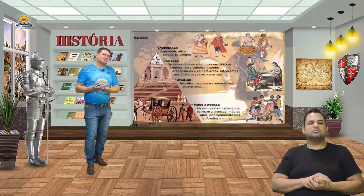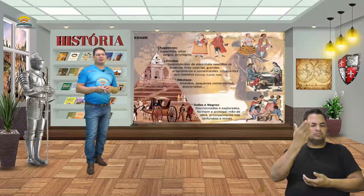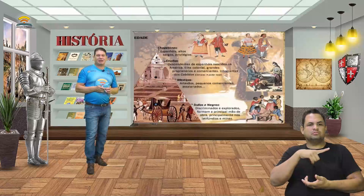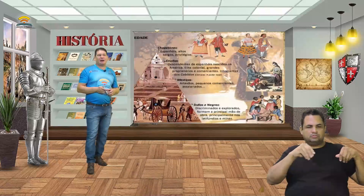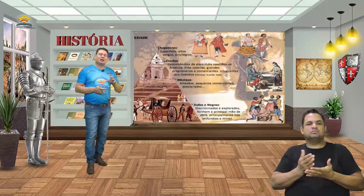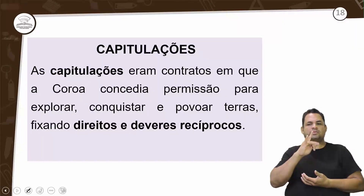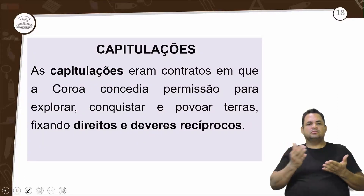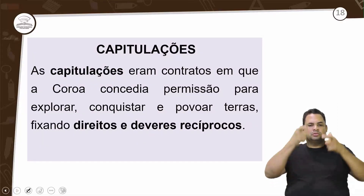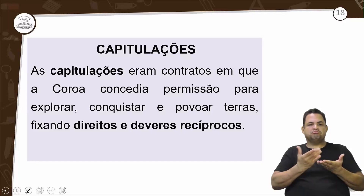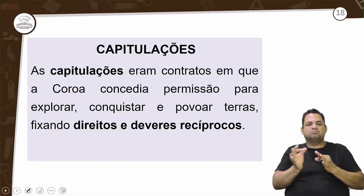Outra característica dessa sociedade são as capitulações. As capitulações eram contratos em que a coroa concedia permissão para explorar, conquistar e povoar terras, fixando direitos e deveres recíprocos. Essas capitulações eram dadas aos adelantados — eram como as capitanias hereditárias daqui.